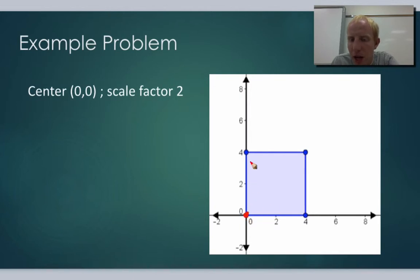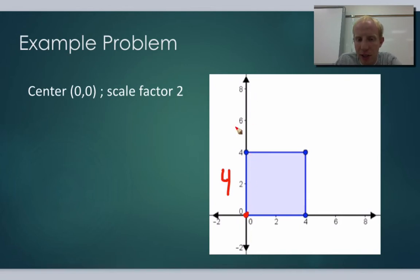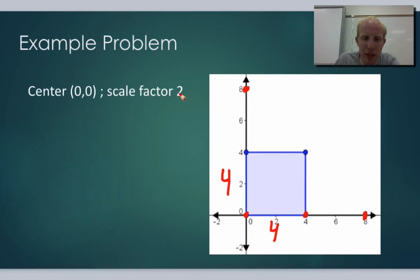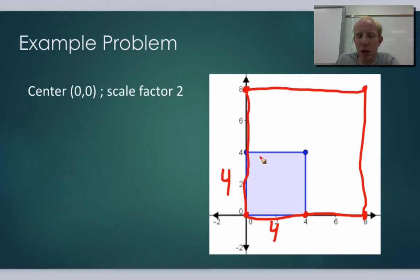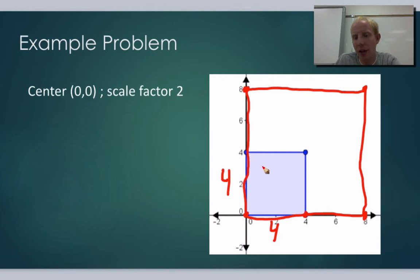We start at (0, 0) and look at how far away everything is from (0, 0). This point is 4 up from (0, 0), so the dilated square must start twice as far away — 8 up instead of 4. Likewise, this point is 4 away from 0, so it should be 8 out. This last point is 4 out and 4 up, so it should be 8 out and 8 up. Our new square with a scale factor of 2 looks like this — each side is now twice as long and each point is now twice as far away. That's our scale factor of 2: take each point twice as far away from the center, and that's your dilation.